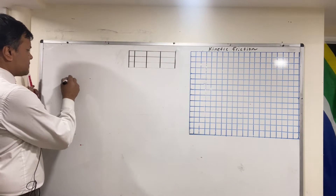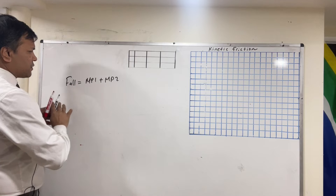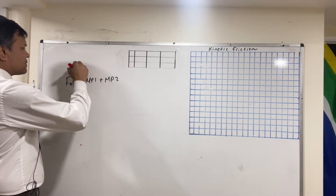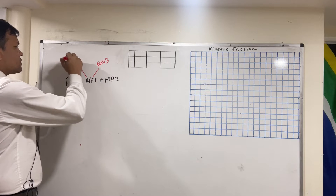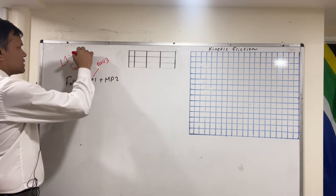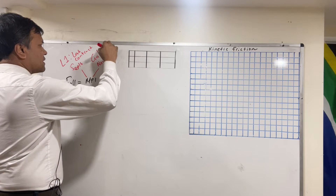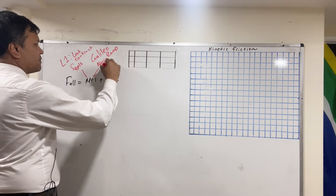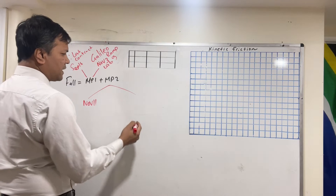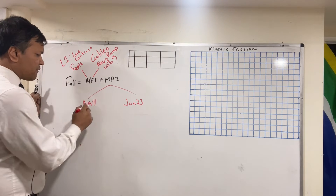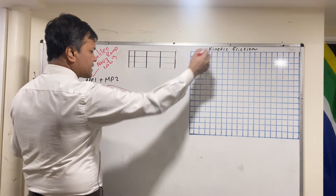The fall semester consists of MP1 plus MP2. MP1 started September 16 and ended November 3. On September 16 we did Lab 1, which is the lab contract, and on November 3 we did the Galileo ramp — that was Lab 9. MP2 started November 11 and will end January 23. The first lab was Reaction Time and the last lab is Kinetic Friction.